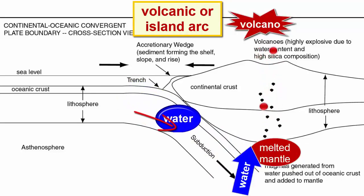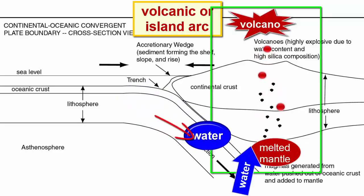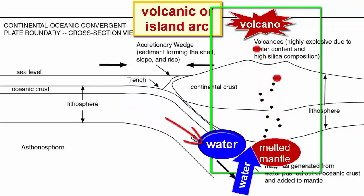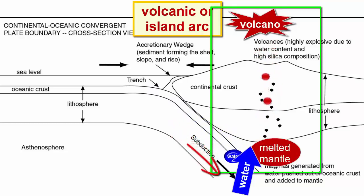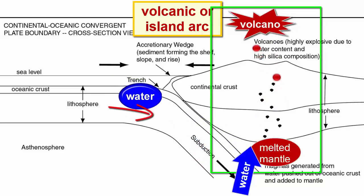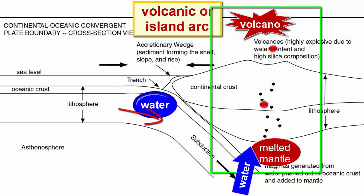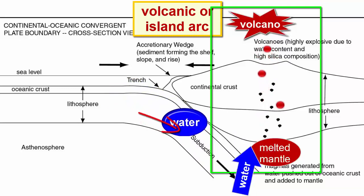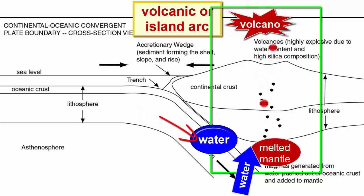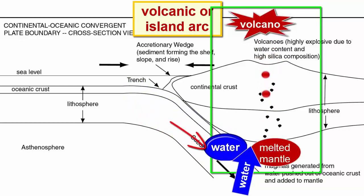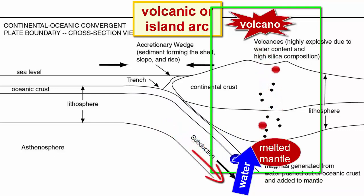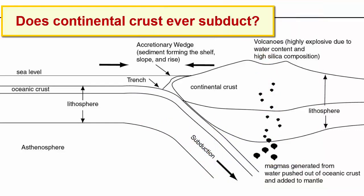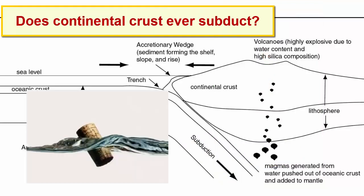Subduction zone volcanoes always happen above the subduction zone on the plate that does not subduct, and they produce some of the most hazardous volcanoes in the world. Among other things, all that water can produce high amounts of pressure underground. Continental crust does not ever subduct — it is the least dense material on the planet.